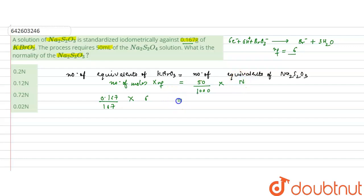So this will equal to 5 by 100 into normality. So we have to calculate the normality of sodium thiosulfate solution here, which can be calculated as: it is equal to 6 by 100 into 6 by 1000 into 100 by 5, so it will be 6 by 50.